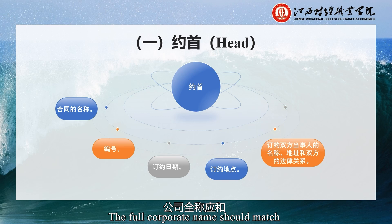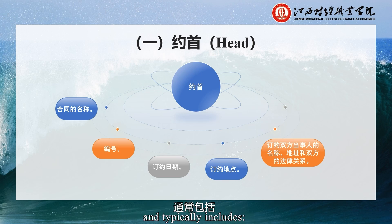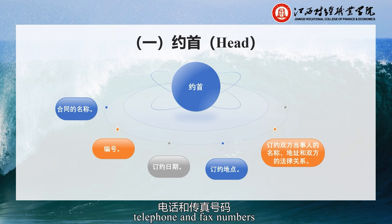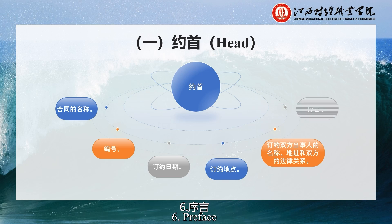The full corporate names should match the company's seal or signature. The company address should be detailed and typically includes city, district, street, road, house number, office building, floor, room number, telephone, and fax numbers, which should be specified with the international dialing code and local area code.